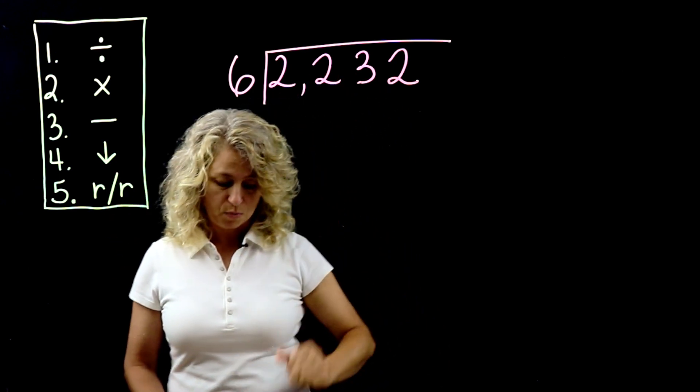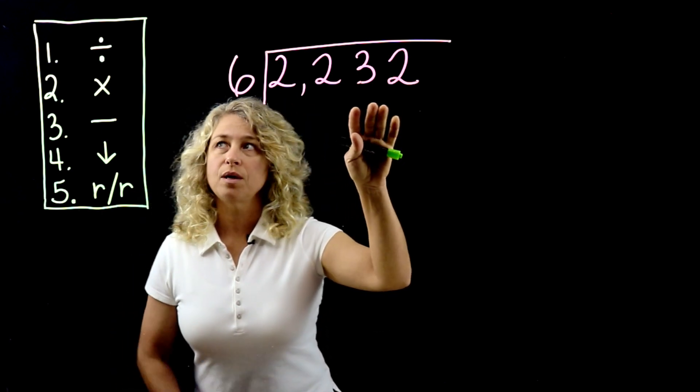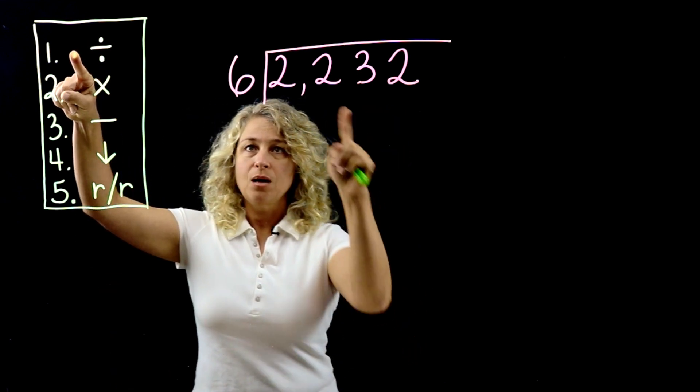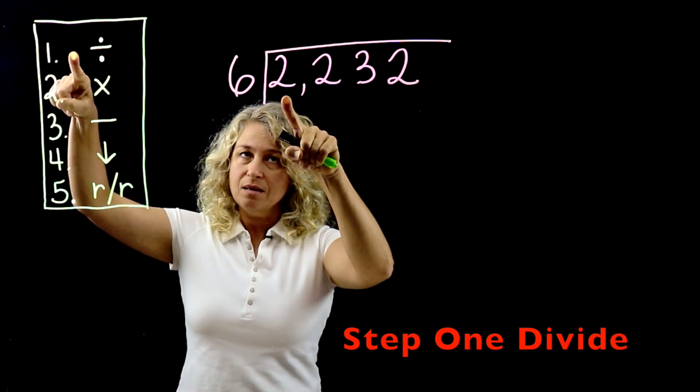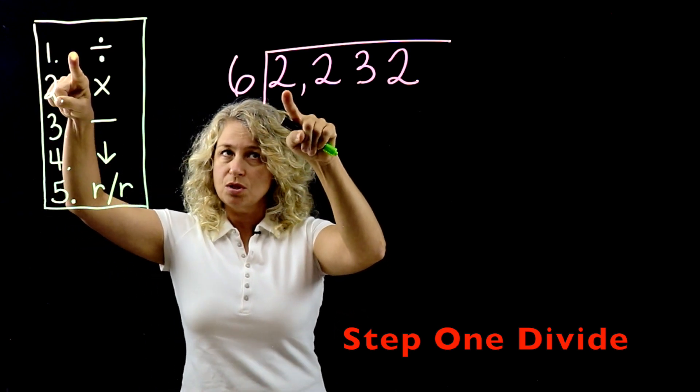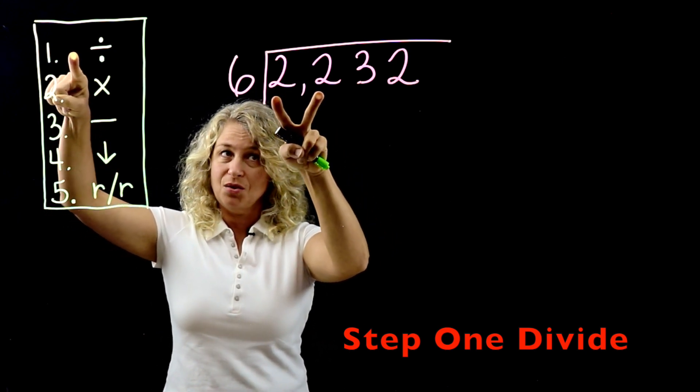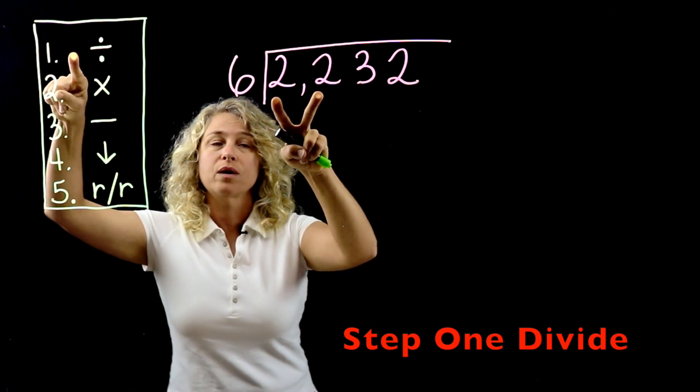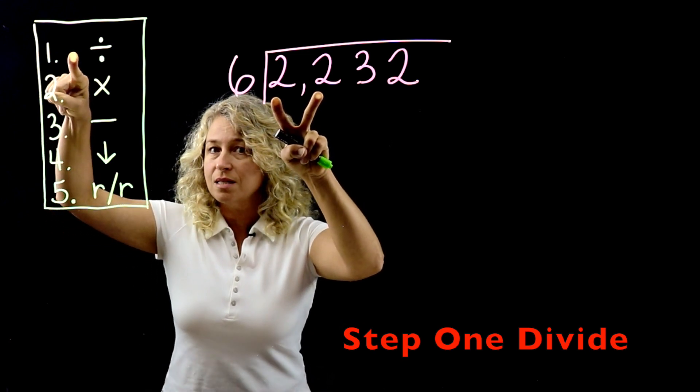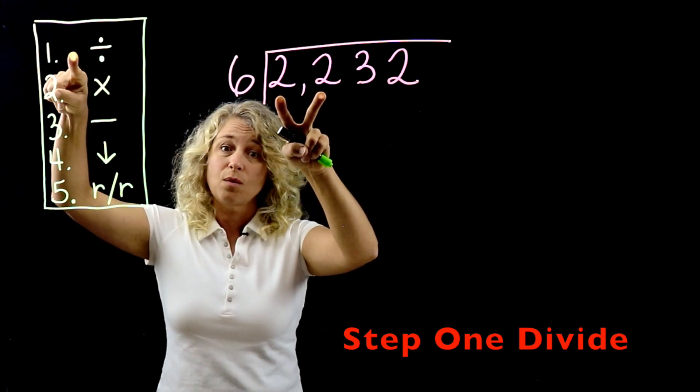So let's look at our first problem. The very first thing you do is step one. We're looking at the 6 and we think, can 6 be divided into 2? Will 6 go into 2? And it will not. But will 6 go into 22? Yes. So you think how many times will it go in without going over? 6 times 3 is 18. If you did 6 times 4, that would go over to 24, and you can't go over.